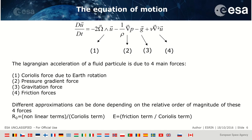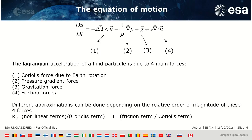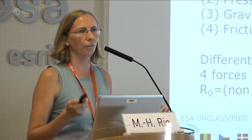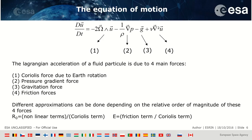To understand and model ocean complexity and dynamics, it is usually governed by a number of equations. One of them — the equation of motion — says that the Lagrangian acceleration of a fluid particle is due to four main forces: the Coriolis force due to Earth's rotation, the pressure gradient force, the gravitation force, and the friction force. To simplify this equation, different approximations can be done, depending on what we want to study and on the relative order of magnitudes of the different terms.